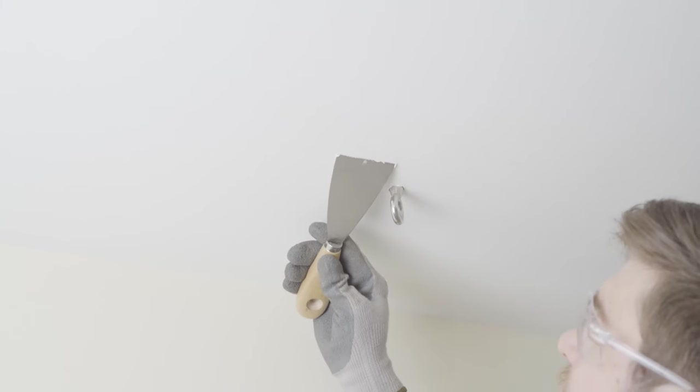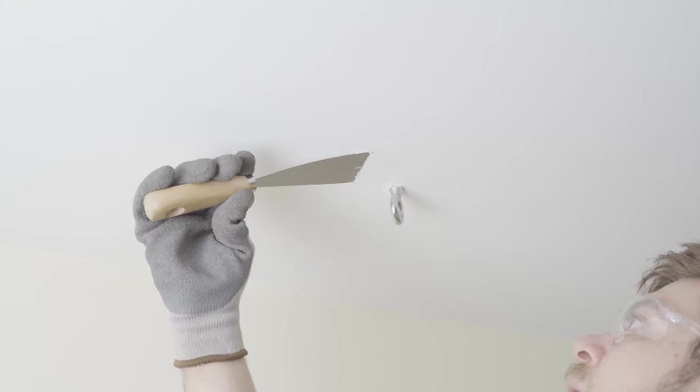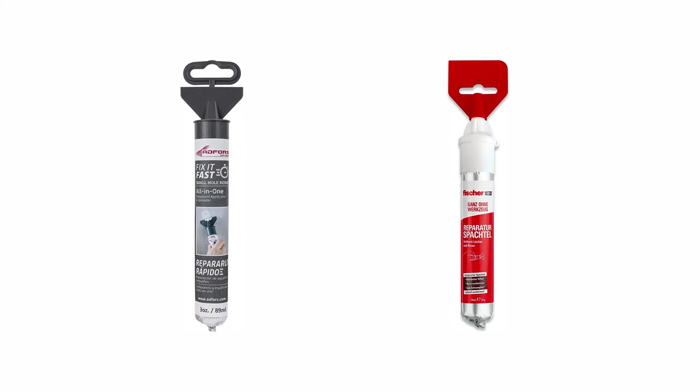By the way, if you have a white wall or ceiling, don't worry too much about drilling the wrong hole. You can quickly fix it with repair putty, and the holes will be almost invisible. Repair mortars are inexpensive and often even have an integrated spatula, so you don't even need additional tools to make the holes disappear.